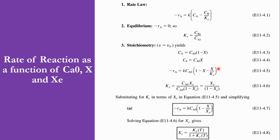Previously we had stopped at the earlier form of the equation, but now we have substituted the value of Ke. We put CB = CA0·Xe and CA = CA0·(1-Xe) into the Ke expression and rearranged accordingly. We get -rA = K·CA0·(1 - X/Xe). This is equation 11-4.6. We can also write Xe = Ke / (1 + Ke). So this completes the first part of today's activity.